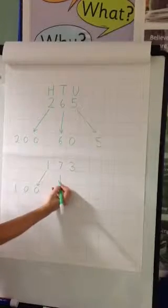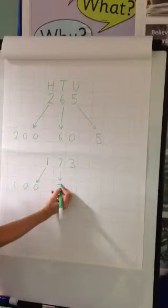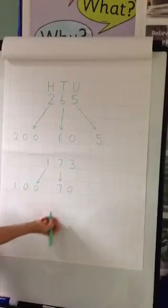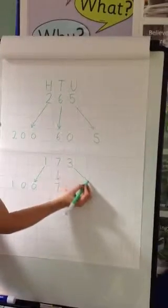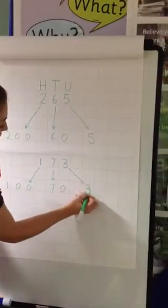The 7 has the same value as 7 tens, or 70. And the 3 is the same value as 3 units.